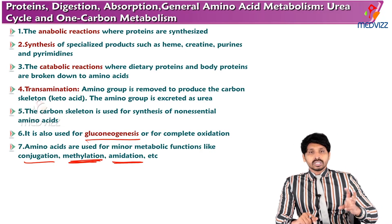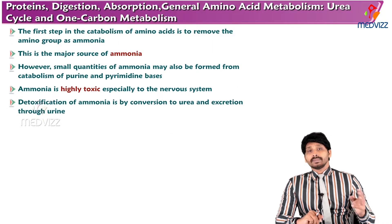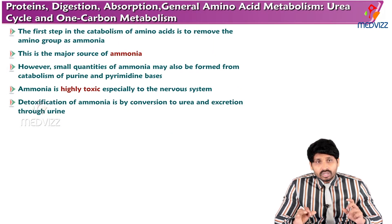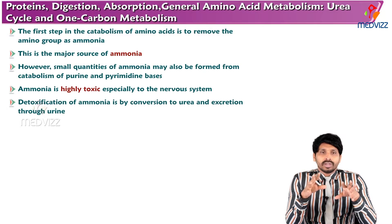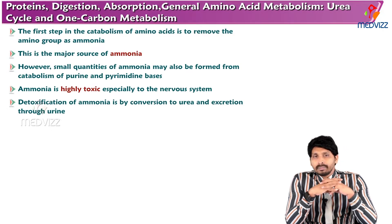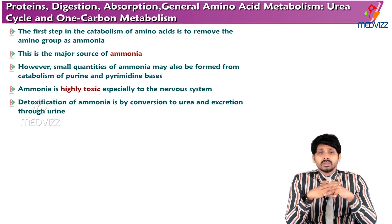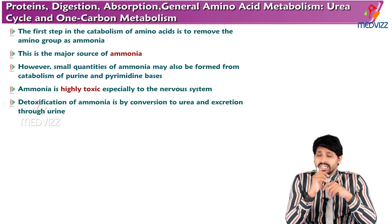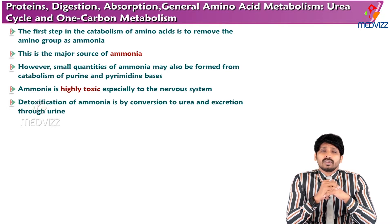Amino acids are also used for minor metabolic functions like conjugation reactions (glycine), methylation (methionine as methyl donor), amidation, and making polyamines. The main purpose of transamination reactions is not to allow free amino group release as ammonia directly. The major source of ammonia is deamination; small quantities also come from catabolism of purines and pyrimidines. Ammonia is highly toxic, especially to the nervous system when in free form.